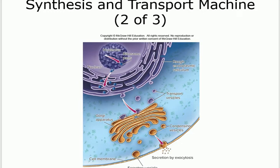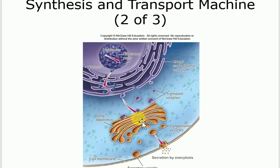The transport vesicles — shown here — move from the rough ER to the maturing surface of the Golgi apparatus. They enter the Golgi apparatus and leave through other types of vesicles depending on what they will be used for.